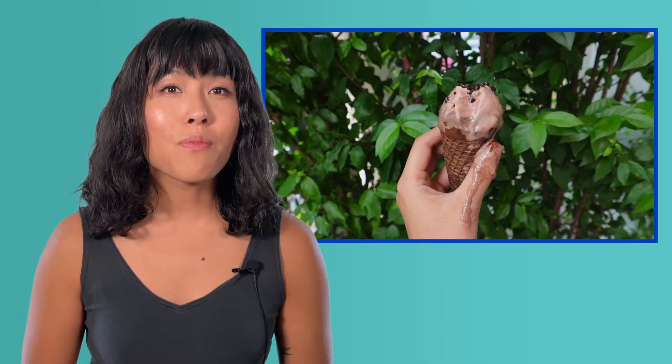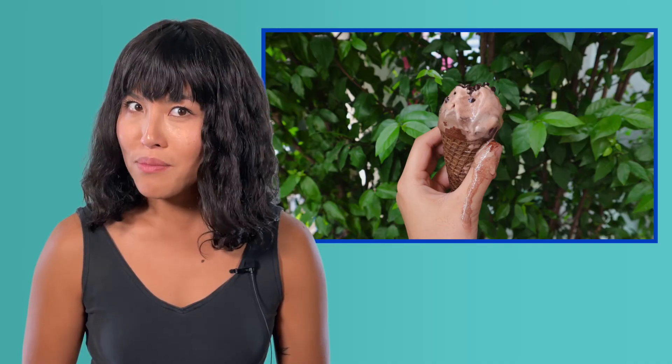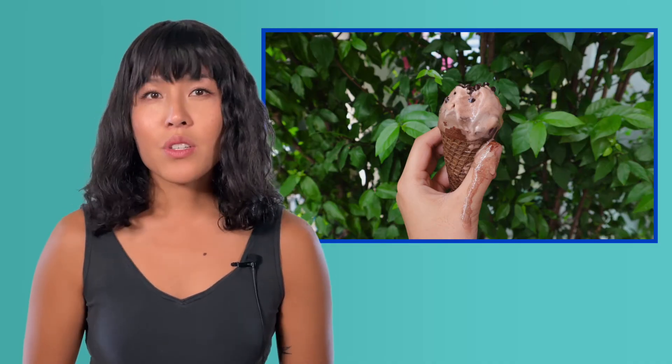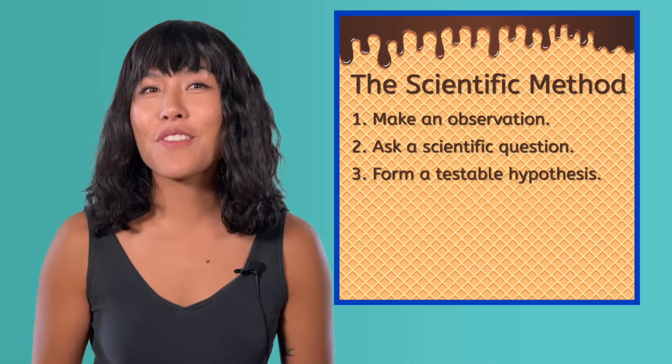Regardless of what you might have observed, it's best practice to review existing research on your topic. For example, is anyone else researching the melting rate of ice cream? If yes, what did they find out? Do you think you should repeat their research to see if you can duplicate it? During this process, you may learn new information that allows you to change or refine your question. From here, you're ready for step three of the scientific method.